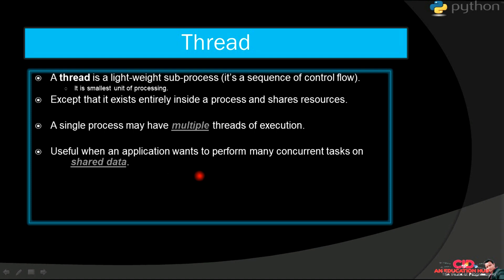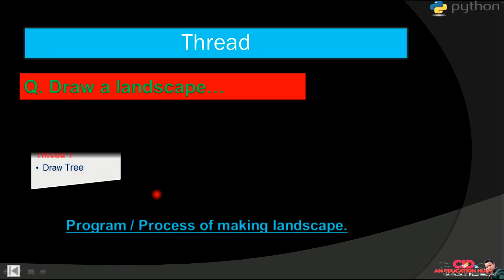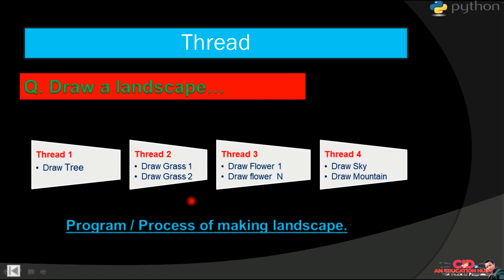It is useful when an application wants to perform many concurrent tasks on shared data. Suppose you have given a task to draw a landscape. Then what will be your process? Your process will be to draw some trees, some grasses, and some flowers, and also sky or mountain, etc. Then suppose draw tree is a method, and draw grass one, draw grass two are another two methods, and flower one, two, flower, these are also some methods. And sky and mountain are also some methods. Then you can suppose these as one thread and control as a thread. Suppose this is a thread one, if this is thread two, thread three, and thread four, then all these are independent of each other.